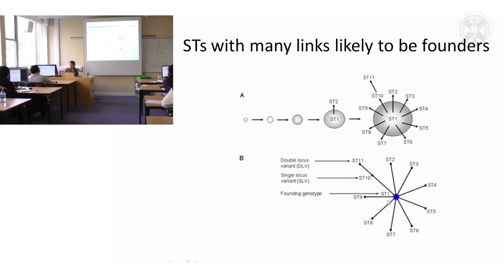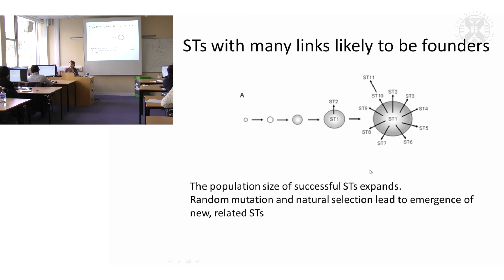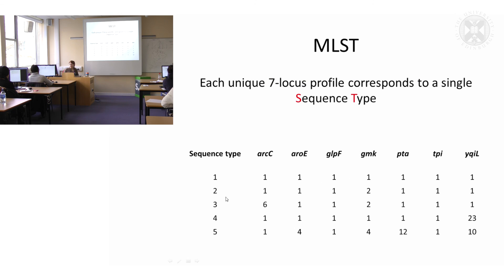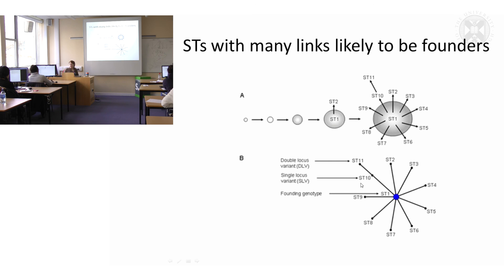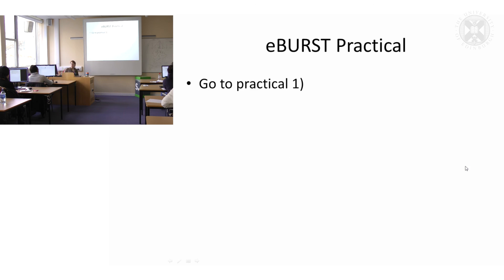So you've got your founding genotype, then a single locus variant, and if there are two differences that would be a double locus variant. If you go to your practical notebook now that you've downloaded, we can have a go at the first practical and see how you get on.